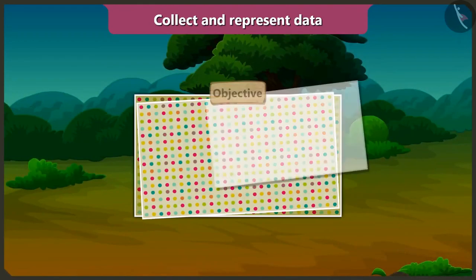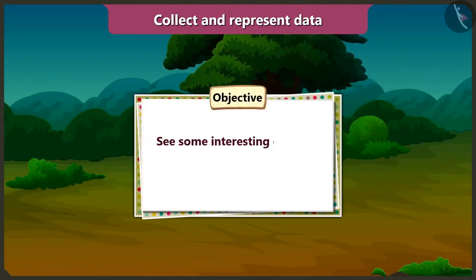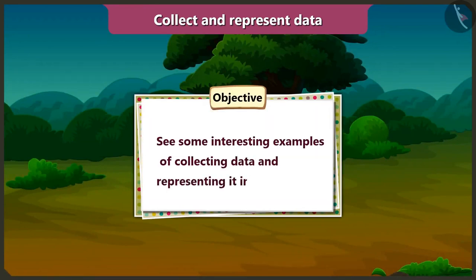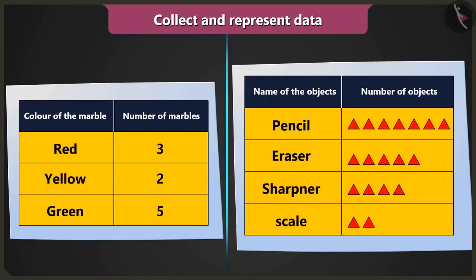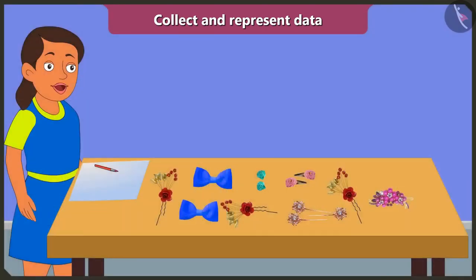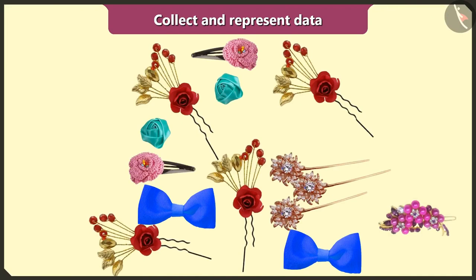Children, in this video we will see some more interesting examples of collecting data and representing them in a table. So, Bunty taught me how to represent data in a table after collecting it. I can easily find out how many types and the counts of the hairpins I have with the help of a table. So first of all, I will make groups of similar hairpins.